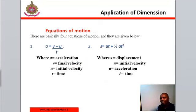Equations of motion. There are four basic equations of motion and they are given below. The first one is given as A equal to final velocity minus initial velocity over time taken.